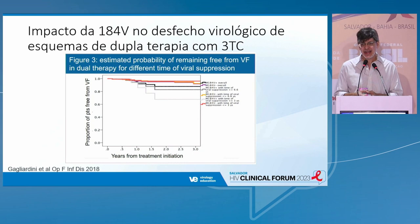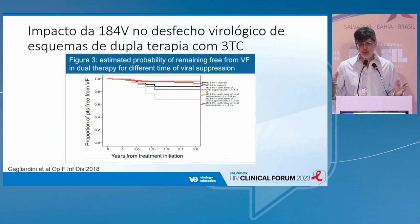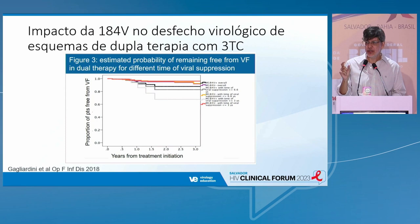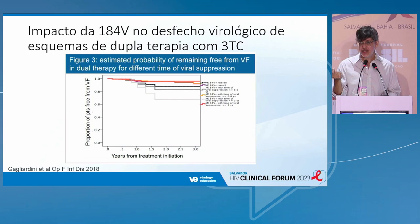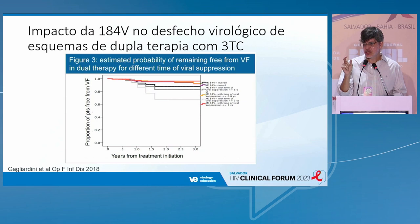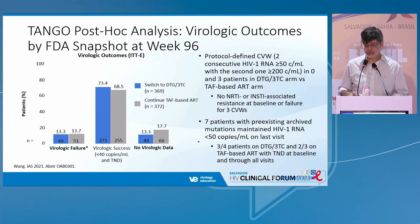Another idea: if tenofovir-lamivudine are totally resistant but still work with dolutegravir, wouldn't lamivudine resistance alone also work? These are data from an Italian observational study by Gagliardini, looking at patients on lamivudine who had the M184V mutation. The study showed that if patients had already been suppressed for over three years before getting 3TC and dolutegravir, it didn't matter having the M184V. Only those patients suppressed for less than three years had an increased risk of failure when simplifying to 3TC and dolutegravir with a historical M184V present.